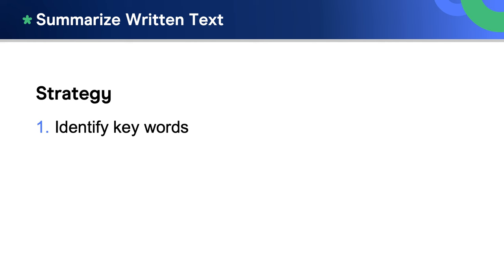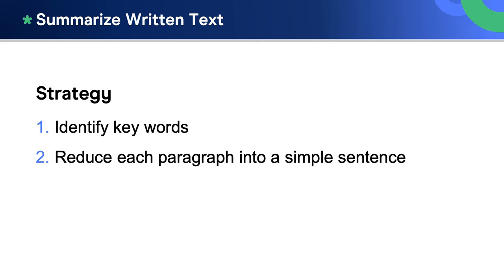After we find these key words, we reduce each paragraph or section into a simple sentence. Often the text has three paragraphs. By writing a simple sentence for each one and breaking the text into smaller pieces, we make the task much more manageable, and as a result, our summary becomes much more structured.